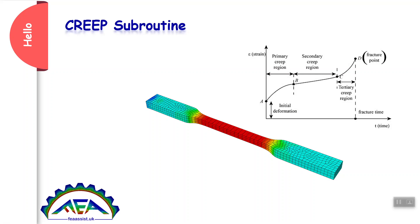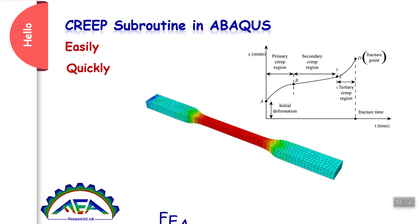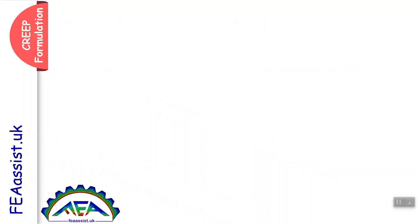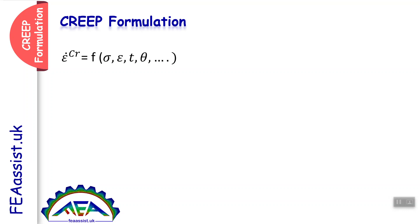Hello, you want to learn CRIP subroutine in Abacus easily and quickly. CRIP is a subroutine to define time-dependent plasticity or viscoplastic behavior of materials. In CRIP formulation, CRIP strain rate is a function of stress, strain, time, temperature, or other variables.